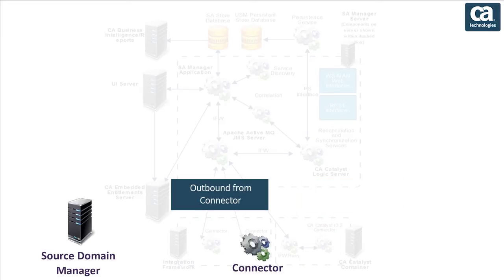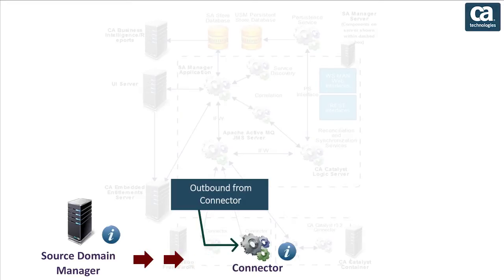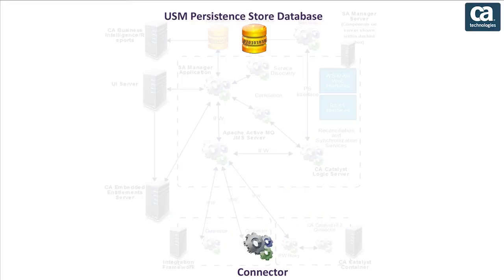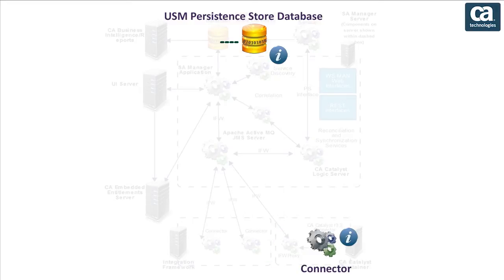Outbound from connector operations obtain data such as services, CIs, topology, alerts, and status from the source domain manager. All connectors must implement outbound operations. Outbound data populates the CA Catalyst persistence store.